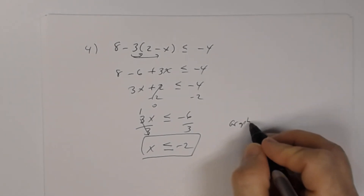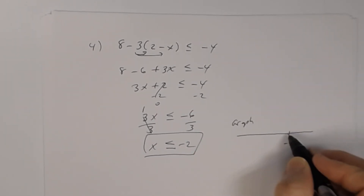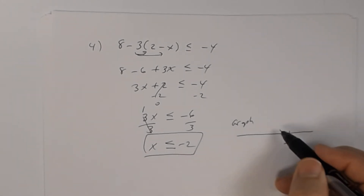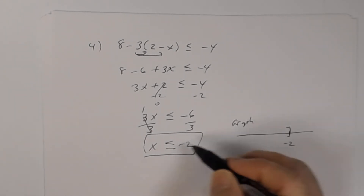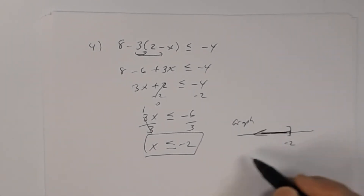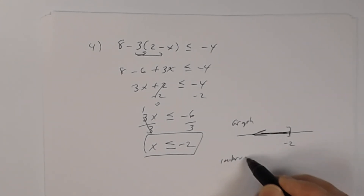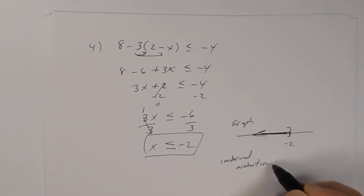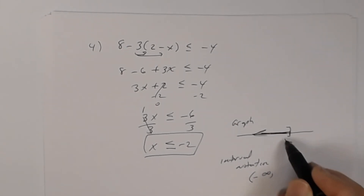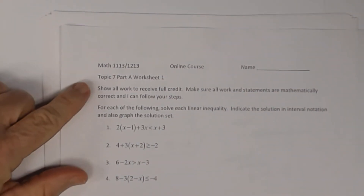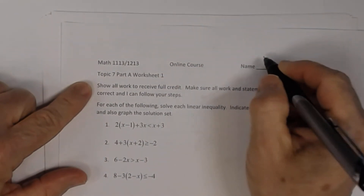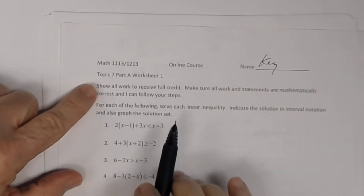The graph has negative 2 on the number line. Since there's an equal sign, use a bracket pointing to the left, because it says less than. Shade everything to the left with an arrow toward negative infinity. The interval notation is: parenthesis, negative infinity, comma, negative 2, bracket — that's (-∞, -2]. That was number 4, and that completes the key for the Topic 7 Part A worksheet on linear inequalities.